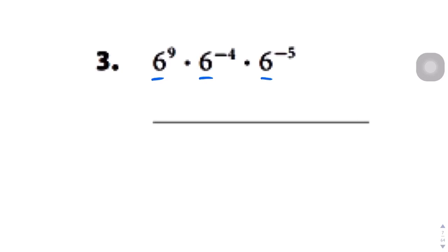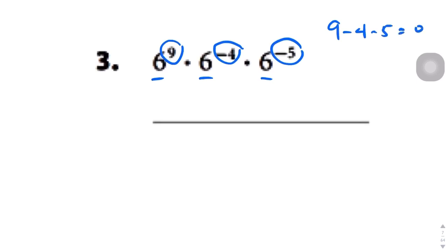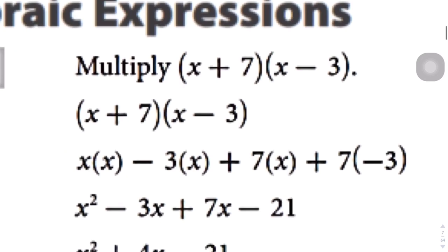Question number 3: we have 3, and they all have the same base. So all we're doing is adding these numbers: 9 minus 4 minus 5 actually gets 0. When you have something to the power of 0, it's just 1 — it always is. Explaining why it's just 1 is another maybe 30 minutes by itself, so just know that anything to the power of 0 is 1. One million to the power of 0 is 1, one billion to the power of 0 is still 1, infinity to the power of 0 is still 1.